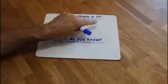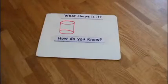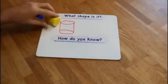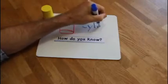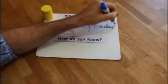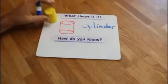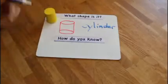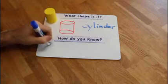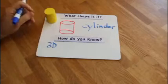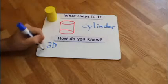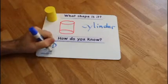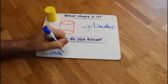What shape is it? Here it is as a picture, here's a real one. It is a cylinder. How do you know this is a cylinder? Well, it's not flat so it is three dimensional or 3D. It has two circle faces, two circle faces.